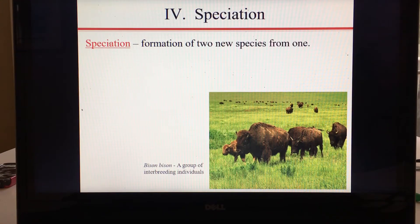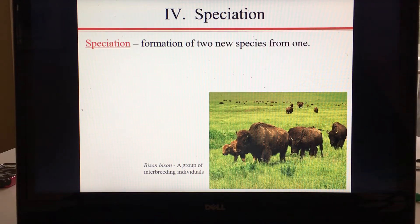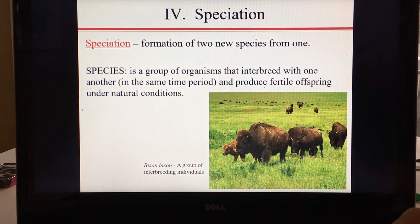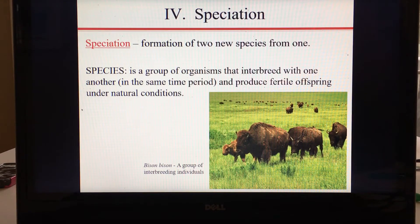This is Evolution Lecture 3 on speciation and patterns of evolution. Speciation is the formation of two new species from one species, and before we talk about what causes speciation, we need to define species.